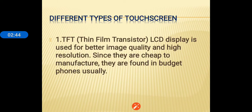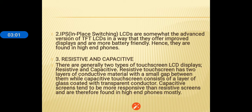The different types of touch screen displays: First is TFT — thin film transistor — LCD display, used for battery, image quality, and high resolution. Since they are cheap to manufacture, they are found in budget phones usually. IPS — in-plane switching — LCDs are an advanced version of TFT LCDs, offering improved display and being more battery-friendly; hence they are found in high-end phones. This is a better technology than standard LCD.